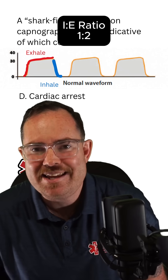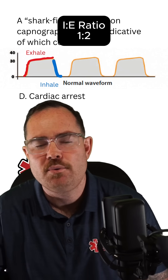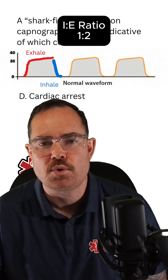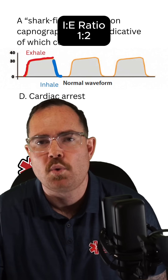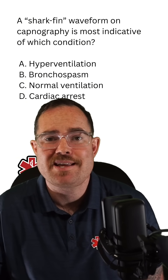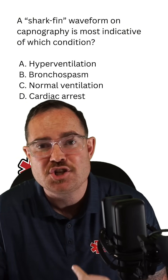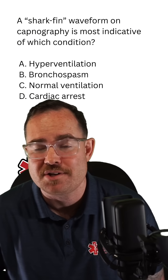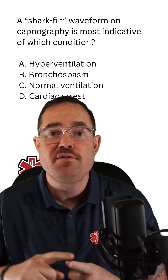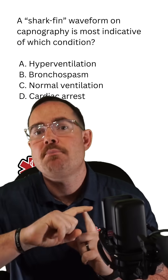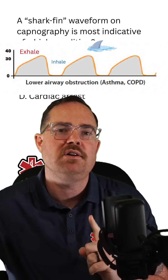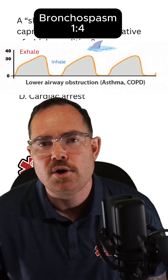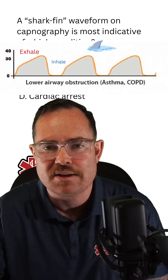A normal IE ratio — inspiratory to expiratory ratio — is one to two. That means your exhalation should be twice as long as your inhalation. So if you see a prolonged exhalation, this could be a sign of bronchospasming.